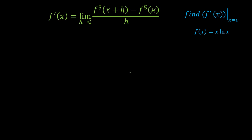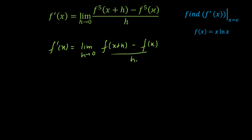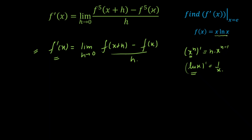We are going to solve this using the first principle. The standard derivative from first principle is: f'(x) = limit as h→0 of [f(x+h) − f(x)]/h. Through this definition we derived all standard results, such as d/dx(x^n) = n·x^(n−1) and d/dx(ln x) = 1/x, as well as the product rule and quotient rule. Since the new definition involves [f(x)]^5, I cannot directly apply the product rule.